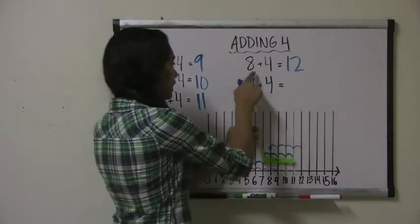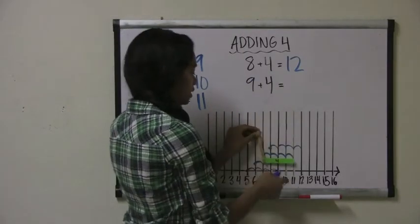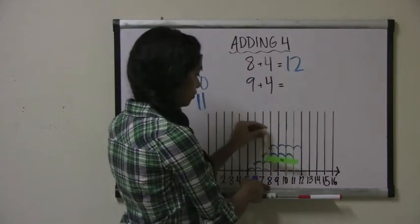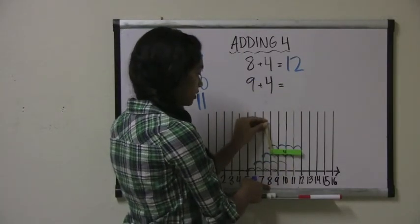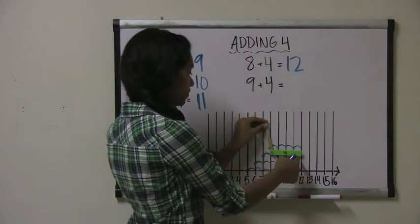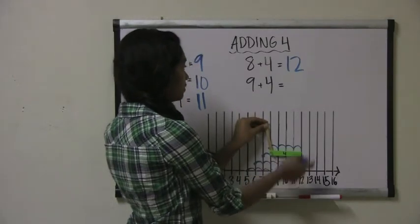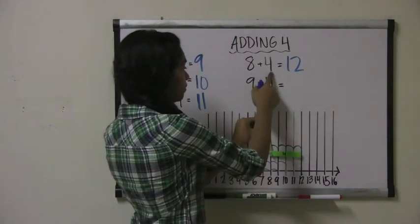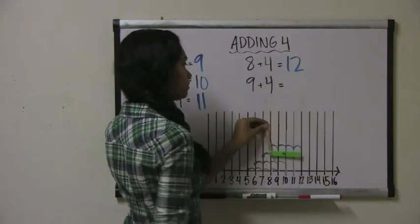Let's try 8 plus 4. Start with the number 8 — we shift this bar over 1 spot, then jump 4 spots to get to 12. So 8 plus 4 equals 12.